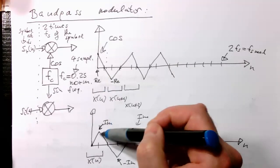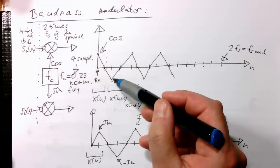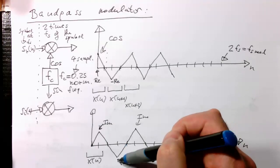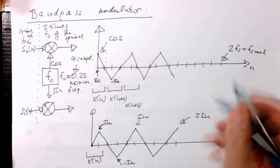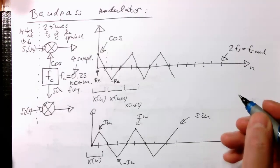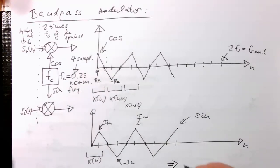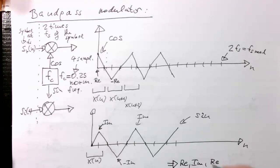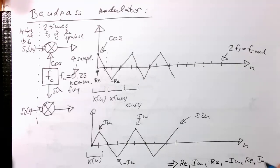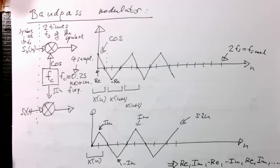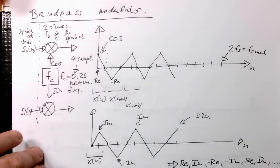So what we see here already is: there's the real part, then the next time step it's the imaginary part, then the next time step is the negative real part, then the next time step is the negative imaginary part, then the real part again, and so on. The overall output of our modulator — summing the cosine and sine outputs together — gives us a sequence which looks like: real, imaginary, minus real, minus imaginary, real, imaginary, and so on. This is a very simple idea and it can be implemented very quickly in software.